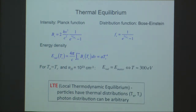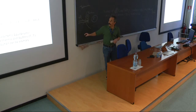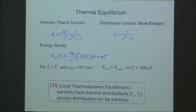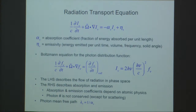We've already talked about what LTE means. We will mostly be assuming that the radiation is not in equilibrium — that the radiation does not have the equilibrium distribution function. But it could be possible that the plasma is in LTE, that the particles have thermal distributions. There are two main branches of radiation transport: those dealing with cases where the material is in LTE and when the material is not in LTE.